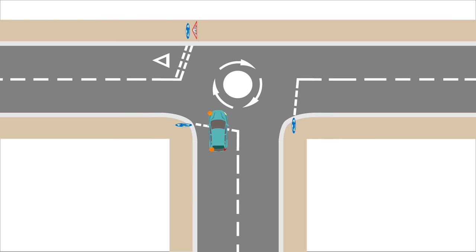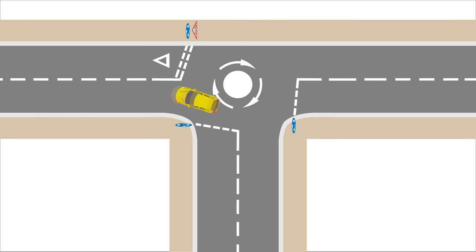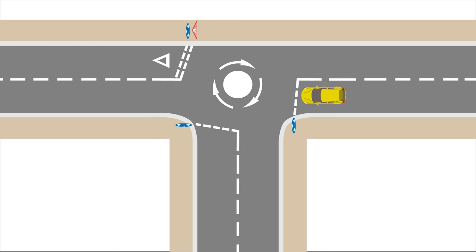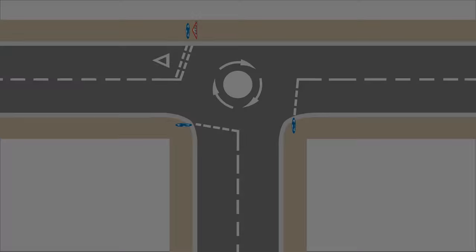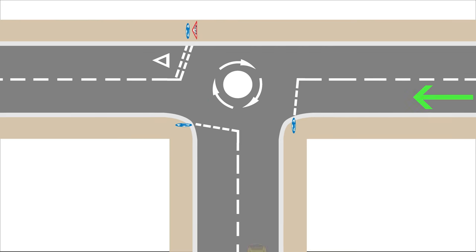On mini roundabouts, make sure you signal left for going left, right for going right, but there is no signal needed when you're going ahead. You don't need to signal when you leave a mini roundabout like you do on a big roundabout, because your signal or lack of signal on approach is enough to let everyone know where you're going. It's important to use other people's signals to determine whether or not you should go. If a car's signal means they won't cross your path, you don't need to wait for them, even if they are from the right.